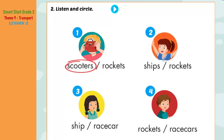Two. Listen and circle. Look at the pictures. Listen. There is one example. One. Hey, everyone, come and look at my new toy! Wow. What can you see, Nick? I can see two red scooters. Can you see the circle? This is an example. Now listen and circle.